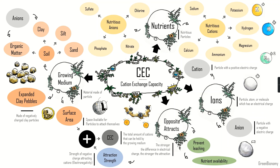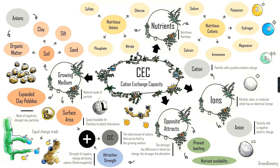Now, how does the plant retrieve these nutritious cations? Plants act like businesspeople and make a trade with the growing medium. The currency plants use is hydrogen — they produce hydrogen particles with a charge of one and exchange them for other cations of equivalent charge. To get one potassium attached to a clay particle, the plant gives one hydrogen — one for one. To exchange for magnesium, which has a charge of two, it must give two hydrogen ions.